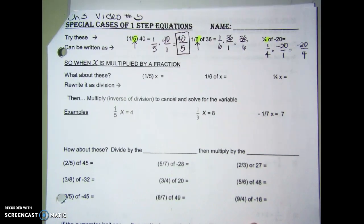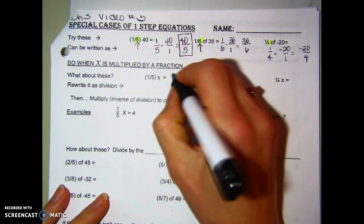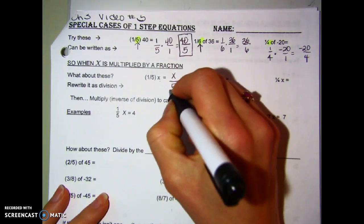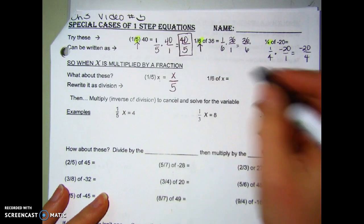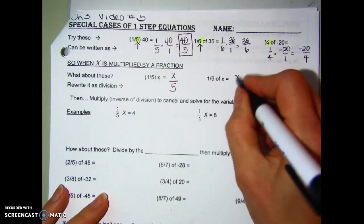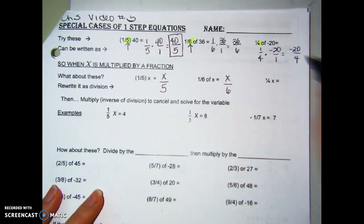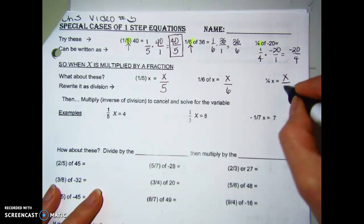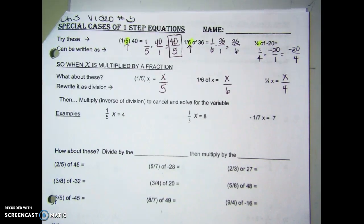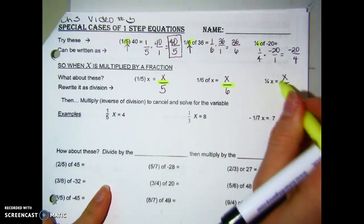If x is being multiplied by a fraction, like one-fifth x, I can think of that as x over 5 — x being divided by 5. Or one-sixth of x, I can rewrite it just as x divided by 6. And one-fourth of x could be written the same way.